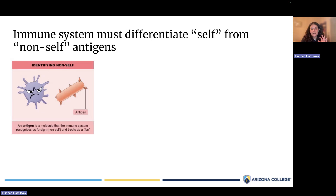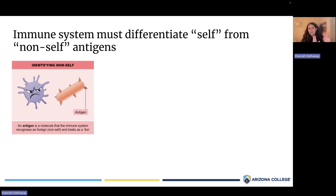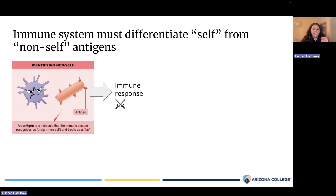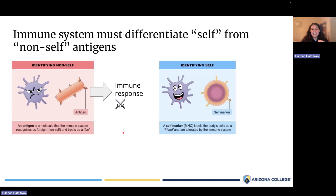The parts of a cell that the immune system recognizes are called antigens. The cells in the immune system are constantly probing their environment and checking what antigens are there. If it's a self-antigen, the immune system ignores it. But if it's a non-self-antigen, the immune system should attack. The normal function is to identify non-self-antigens, recognize them as foreign, and attack and kill those things.